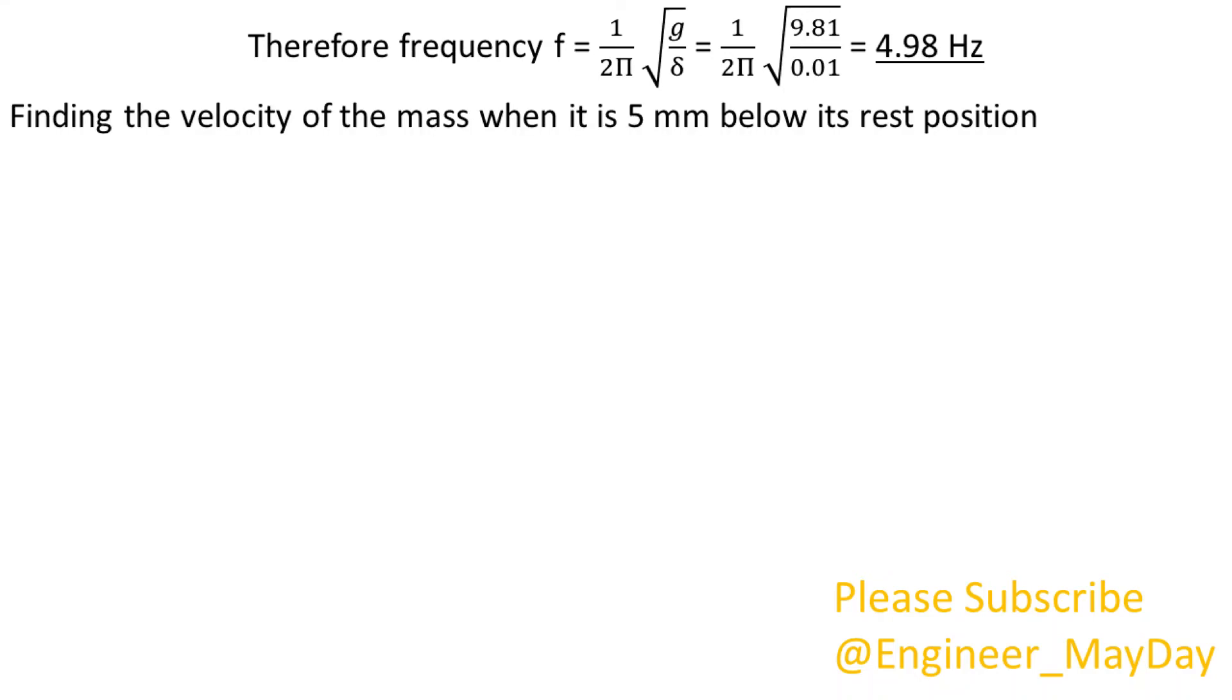Finding the velocity of the mass when it is 5 millimeters below its rest position. Velocity V is given by angular velocity omega multiplied by the square root of radius r squared minus distance x squared.